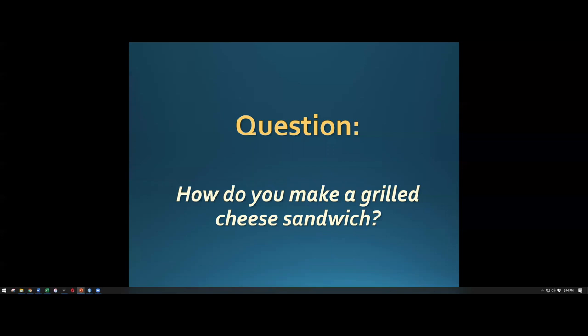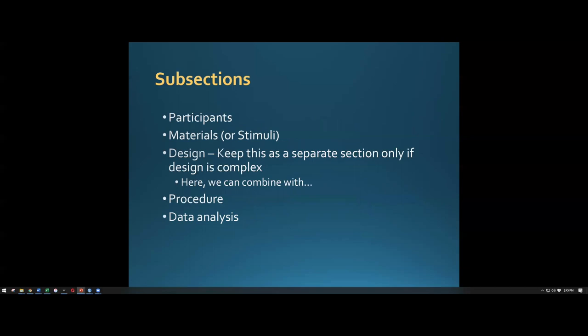You need to be very specific if you want someone to replicate your study — just like replicating a grilled cheese. But do we care about the color of the pan? No. Do we care whether they used a metal versus plastic spatula? No. There's a level of detail you don't need to include, but you do need to be specific enough that other researchers can copy what you've done.